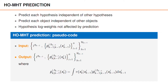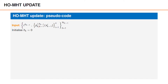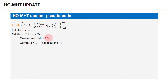However, the update is a bit more complicated. In the update, we begin with the predicted parameters and we initialize an index variable h_k to zero. Lowercase h_k is the index for the posterior hypotheses. Then, for each predicted hypothesis, we first create a cost matrix for the assignment problem, and then we compute capital M associations, theta_m. For each association m, we increase the posterior index by one, because each combination of the predicted hypothesis and data association will lead to a hypothesis in the posterior density.